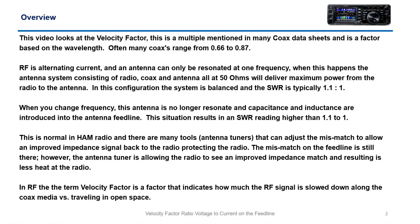RF is alternating current and an antenna can only be resonant at one frequency. When this happens, the antenna system consisting of the radio, coax, and antenna — all at 50 ohms — will deliver maximum power. This configuration is often referred to as a balanced feed line system, which means you'll typically have an SWR of 1.1 to 1. When you change frequency, the antenna is no longer resonant and capacitance and inductance are introduced into the feed line, resulting in an SWR higher than 1.1 to 1.